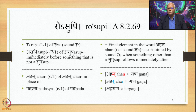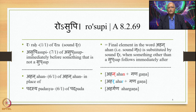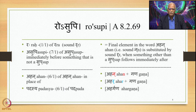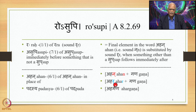The meaning of the Sutra Rosupi is: the final element in the word Ahan (meaning 'a day'), that is sound Na, is substituted by sound R when something other than a Sup follows immediately after. So here we have the example Ahan plus Gana — Na comes at the end of Ahan and is also at Pada-end — it is substituted by R, giving Ahar Gana, and finally Ahar Gana.